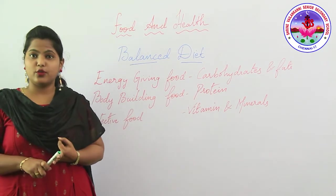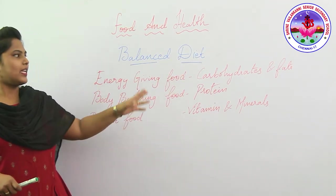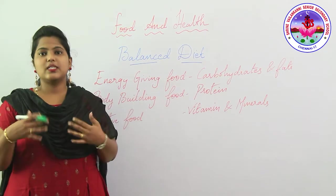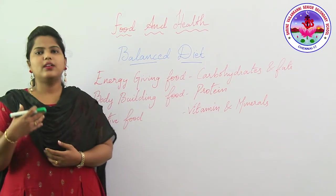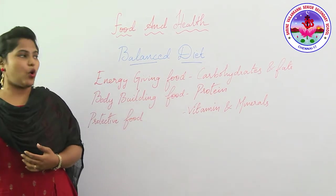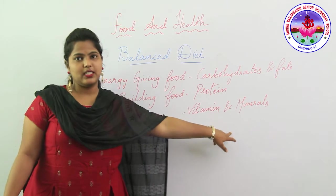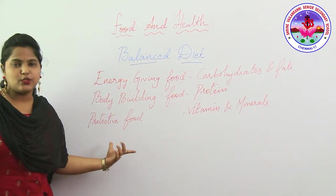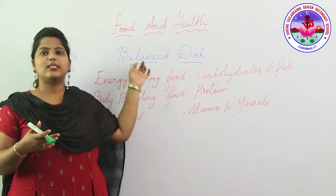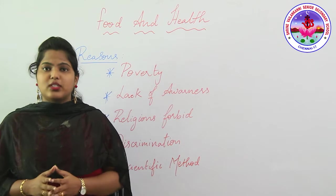There are three types of food: energy-giving food, body-building food, and protective food. Food that contains carbohydrates and fat gives us energy to do all our work. Food rich in protein helps us to build our body. Food that has vitamins and minerals helps to protect us from all diseases. If you intake food with the right amount of all five nutrients, it is called a balanced diet.